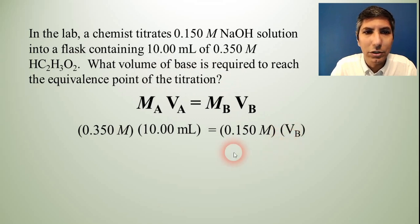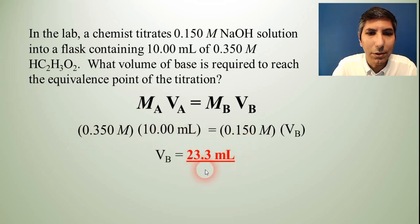So this is just a simple algebra problem. When you take 0.35 times 10 and divide by 0.15, you get the correct answer of about 23.3 milliliters as your answer. So that's how much base it should take to get to the equivalence point.